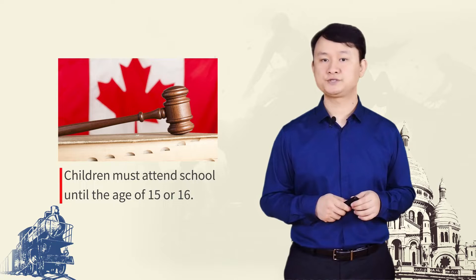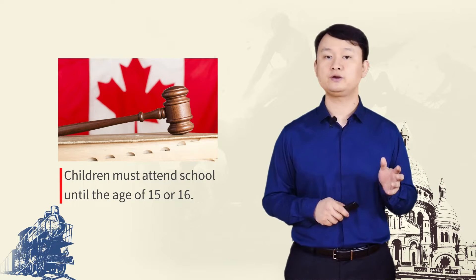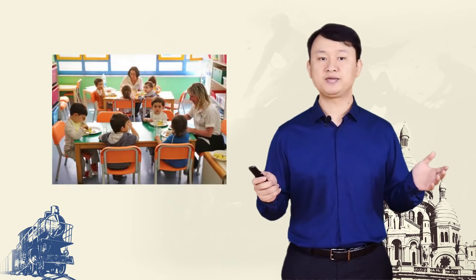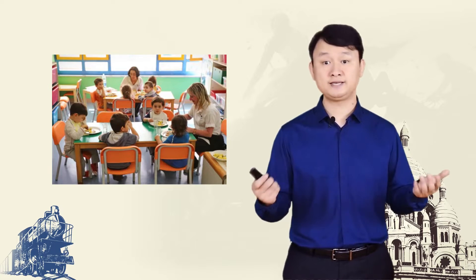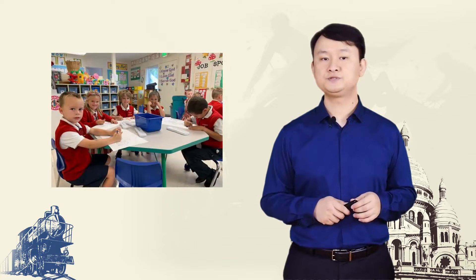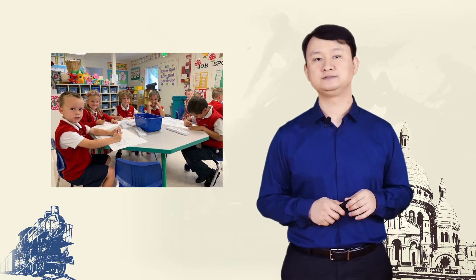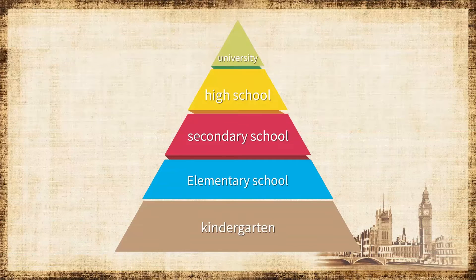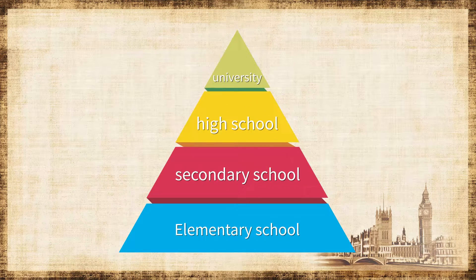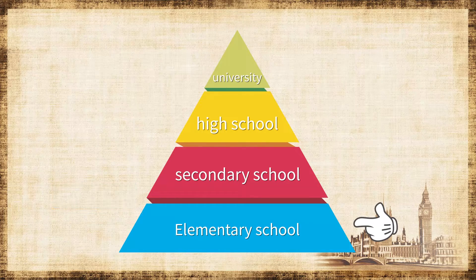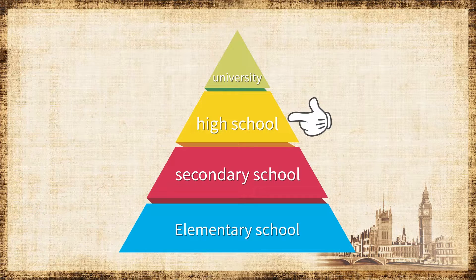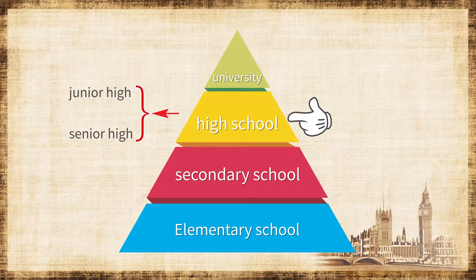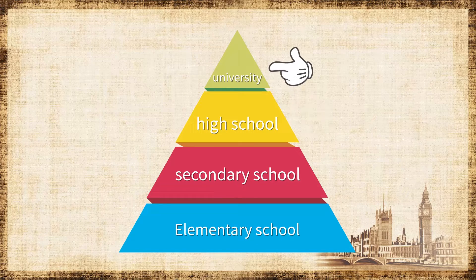By law, children must attend school until the age of 15 or 16, depending on where they live. Children begin their education in elementary school at the age of 6 or 7. Elementary schools usually start with kindergarten for little children, but it may vary from school to school or from province to province. Some provinces do not offer kindergarten in their educational system. Elementary school runs through to grades 6 to 8 and is followed by secondary school or high school. In some provinces, high school is divided into junior high and senior high. Students must complete high school to be admitted to college or university.